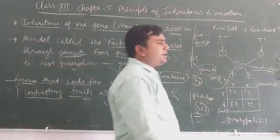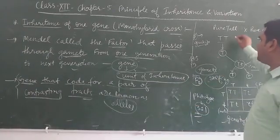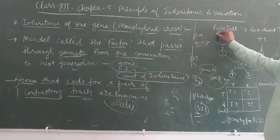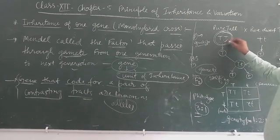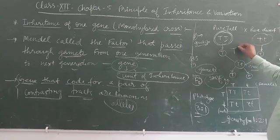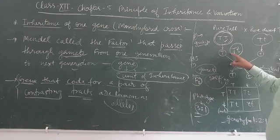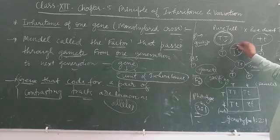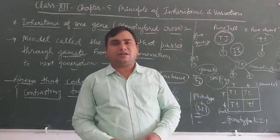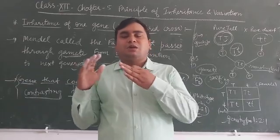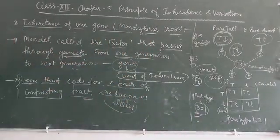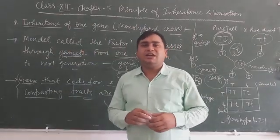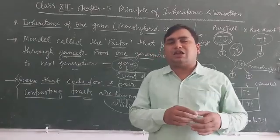One term here also used by Mendel: homozygous and heterozygous. Homozygous means this one is homozygous, that is known as homozygous. Homo means same zygous. And heterozygous means heterozygous, not similar in structure. Hetero means different. Capital T, small t that represents the heterozygous. Here capital T and small t used for representing the characters of the pea plant here, tall and dwarf.